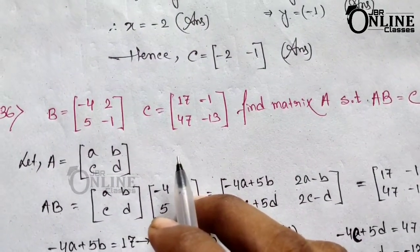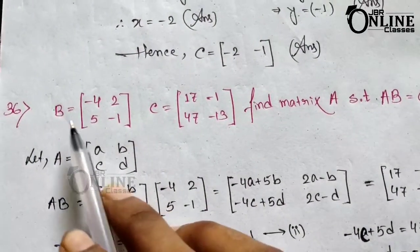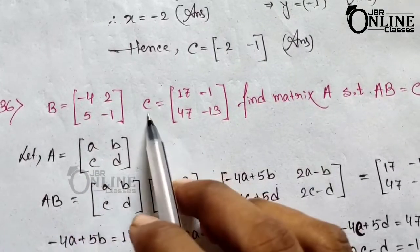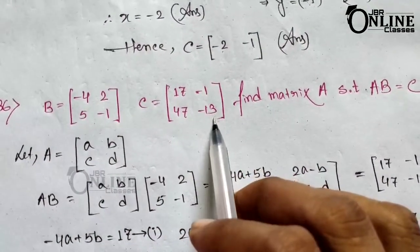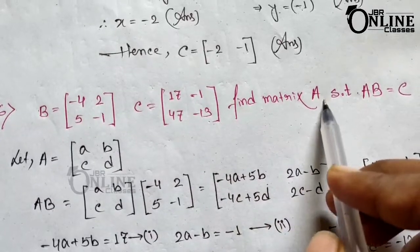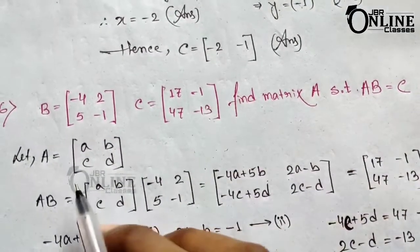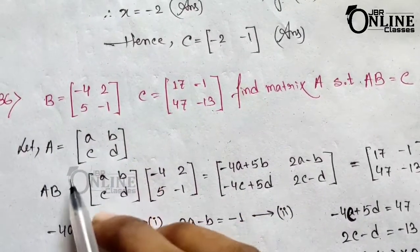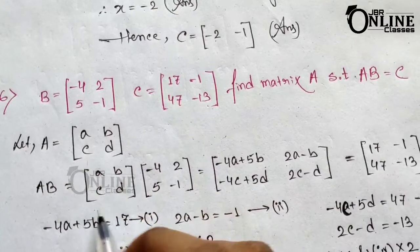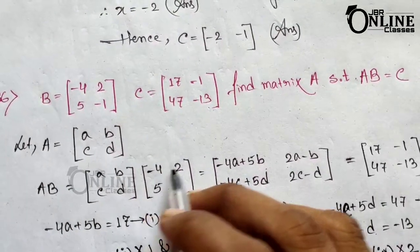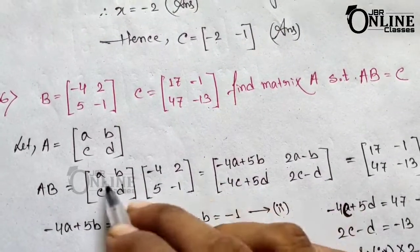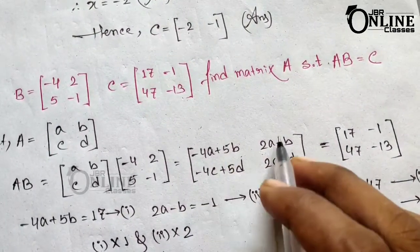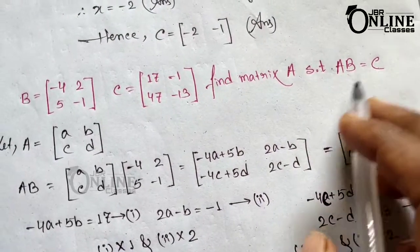Sum number 36, the last sum in this exercise: B equals [minus 4, 2; 5, minus 1] and C equals [7, minus 1; 47, minus 13]. Find matrix A such that AB equals C. Let A equal [a, b; c, d]. Then AB equals [a, b; c, d] times B, and multiplying these two matrices gives the result matrix.